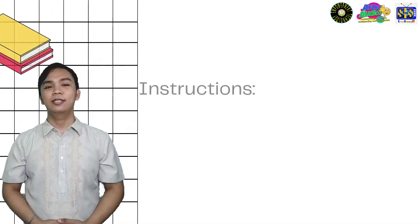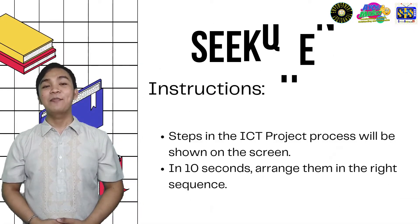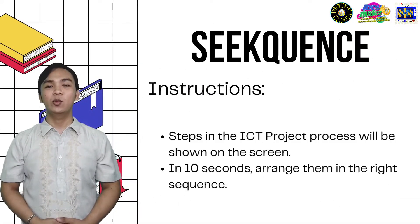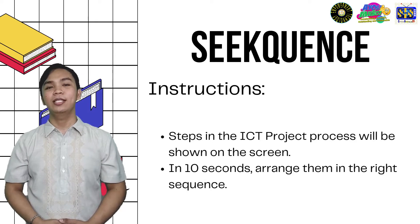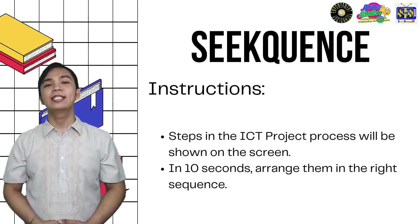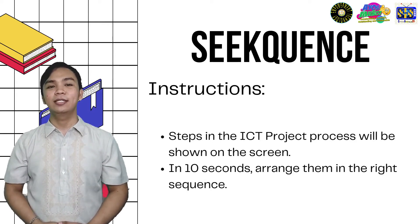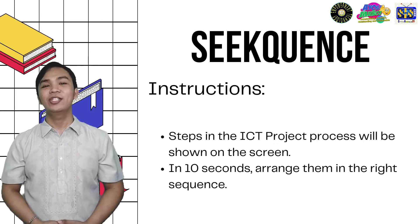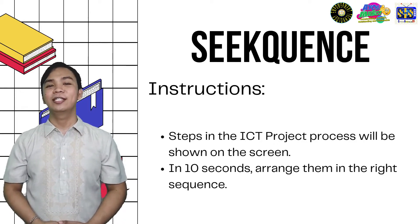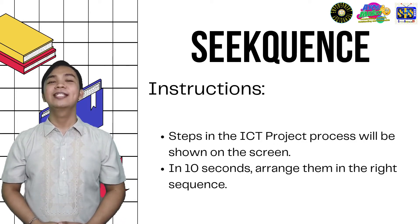Before we begin with our lesson, I will be giving you a simple activity. This activity is called Sequence. Here are the instructions: Steps in the ICT project process will be shown on the screen. Arrange them in the right sequence. Did you get the instructions? That's good. Let's start.